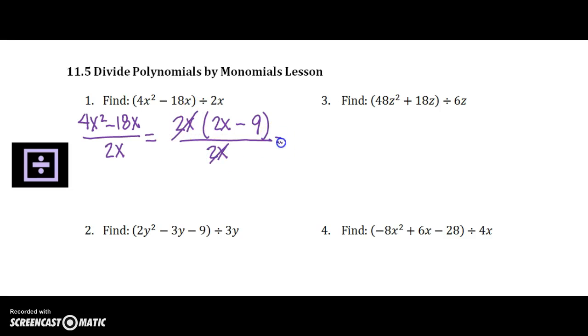So that leaves us with 2x minus 9 because we've taken the 2x out of the 4x squared and the 18x over 2x. And then the 2x is canceled and you're left with 2x minus 9 as your simplified answer. But I want you to also see that 4x squared minus 18x being divided by 2x, they're each divided by 2x. Now someone might say, I thought binomials were bound together by this negative sign. And they are. But because they're both over 2x, you can look at them individually.